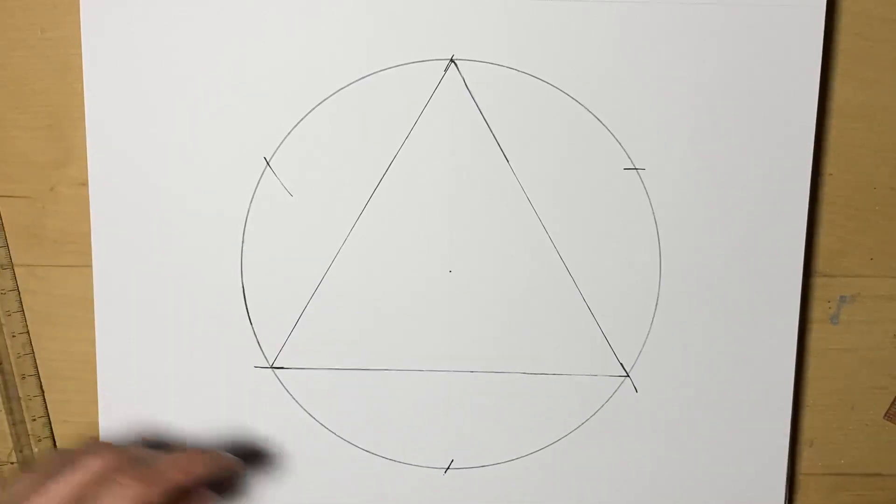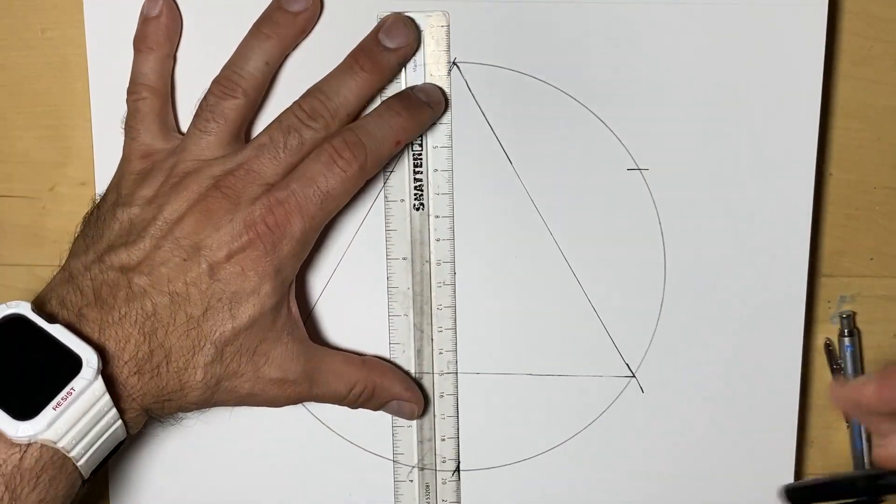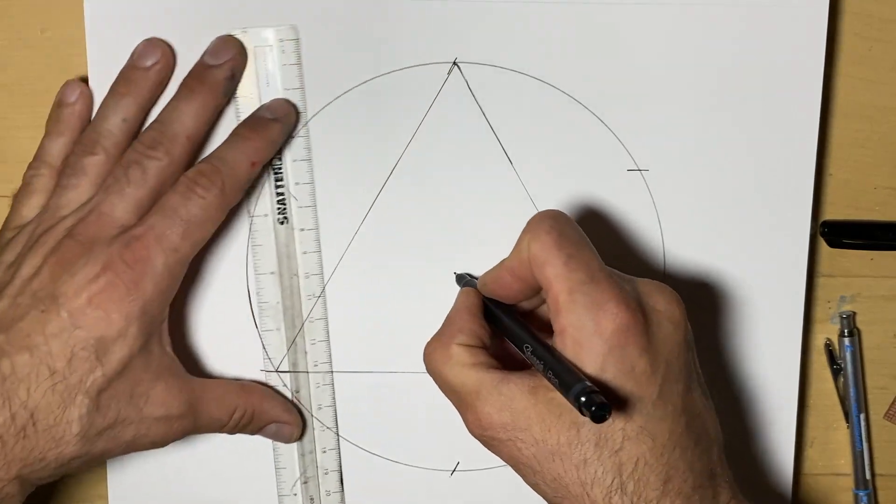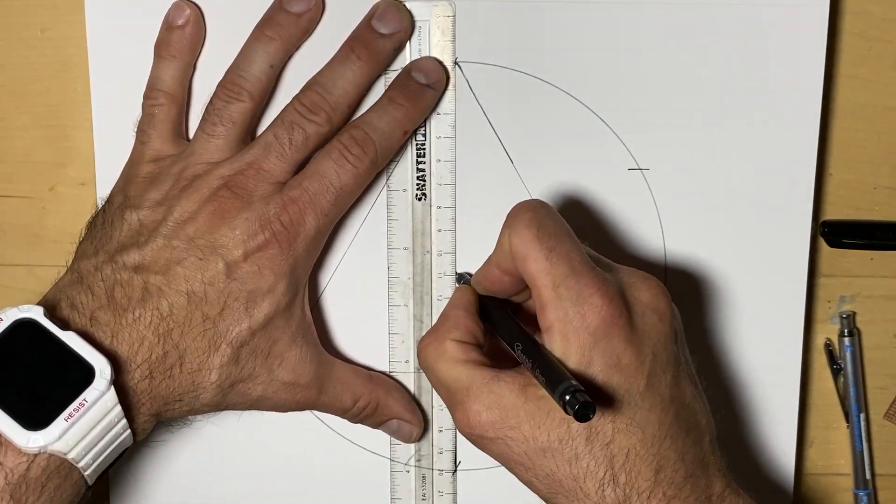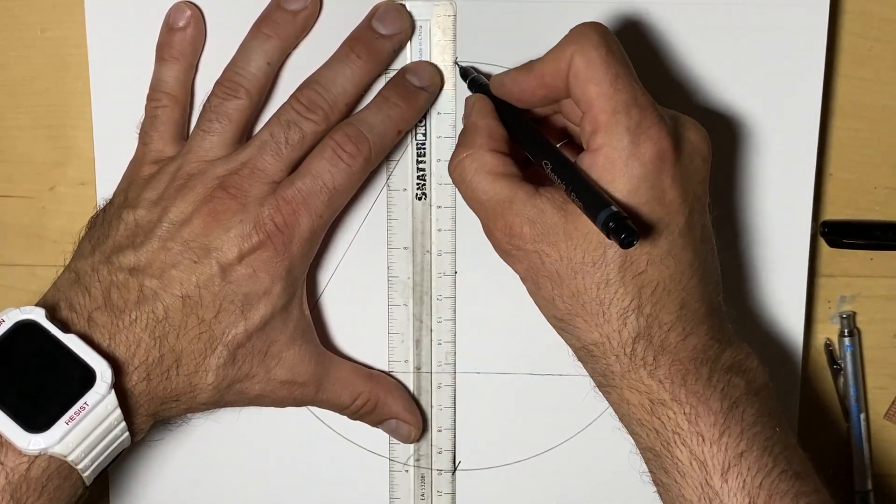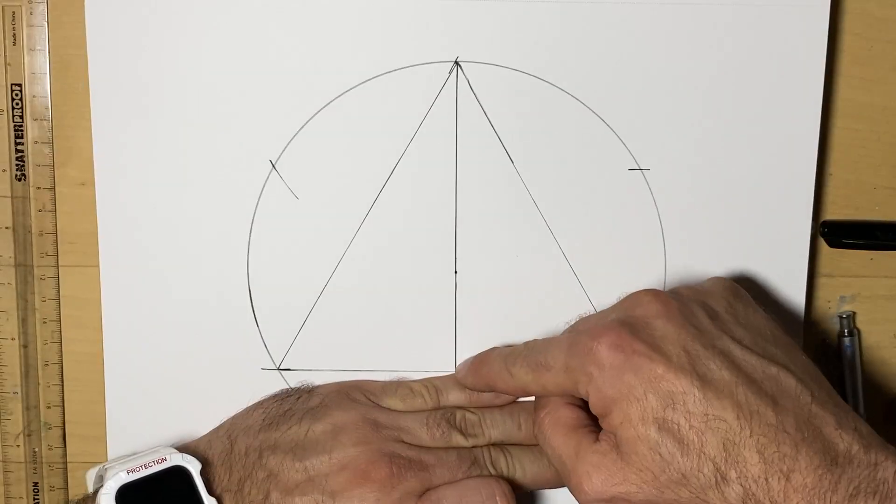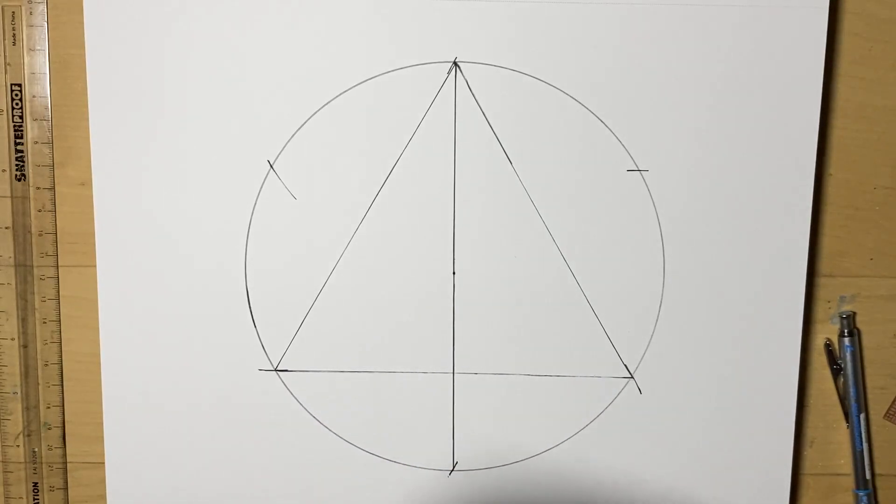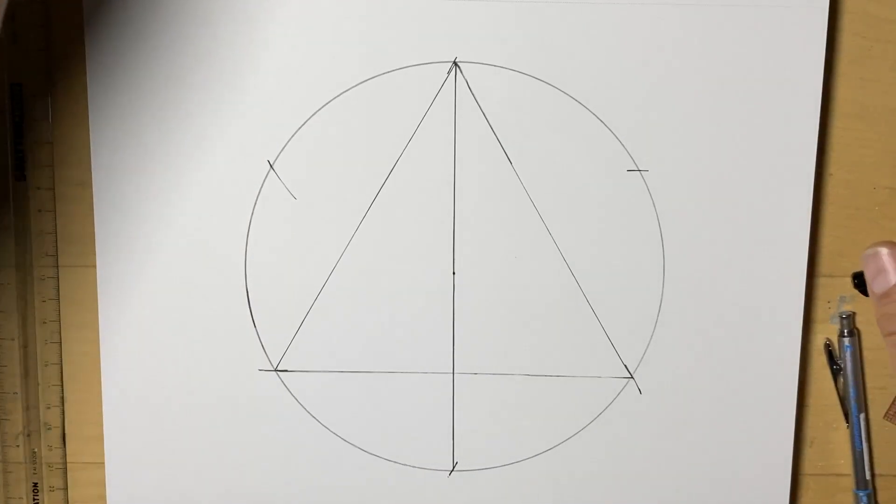So the next step is we're going to connect from the top of our triangle and we're going to go all the way down. I like to put the pen in the center first and then line it up and draw. The line would stop here. Normally I would erase it. I can go over with another color in a moment when we're done.